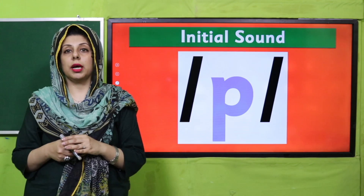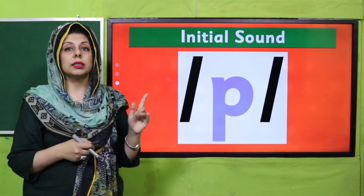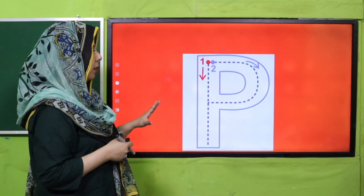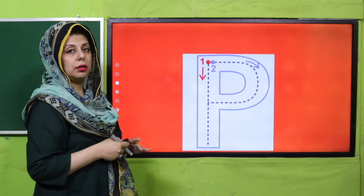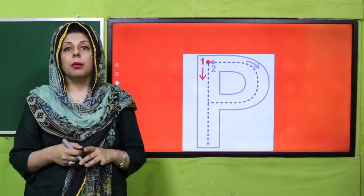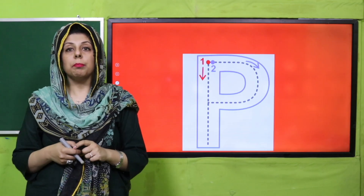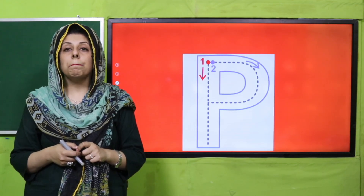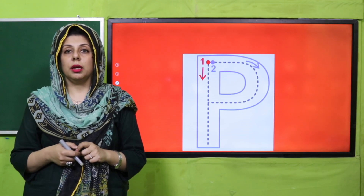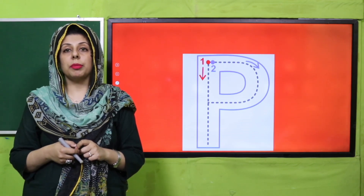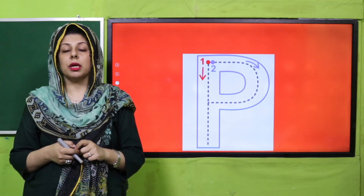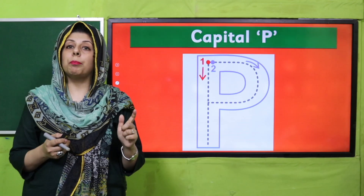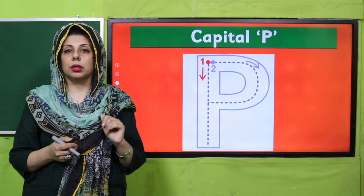Abhi aapne kya karna hai — is sound ka face dekhna hai. Toh yeh hai P. P ka capital letter hai P. This is the capital letter P. Aur awaz hai is ki — P.